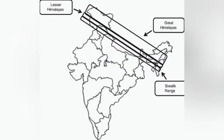Longitudinally, the Himalayas consist of four parallel ranges from south to north. The first one is the Outer Himalayas, that is Shivalik. It is an almost continuous range of low hills, composed of unconsolidated sediments, emerged as the most recent phase in Himalayan origin.